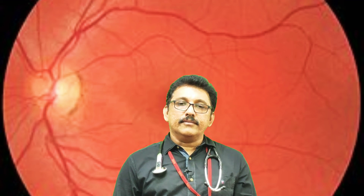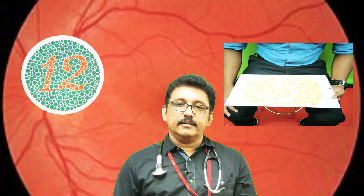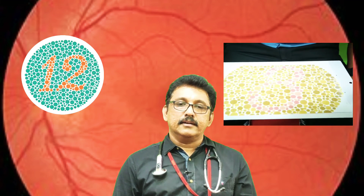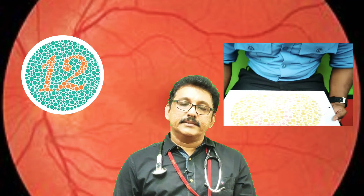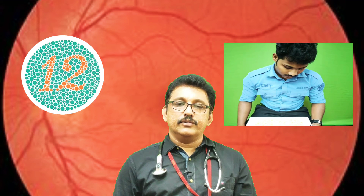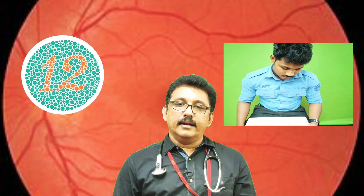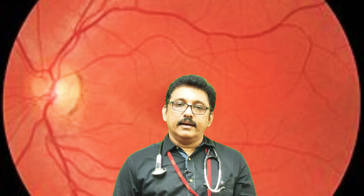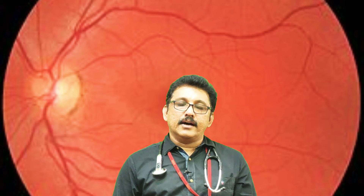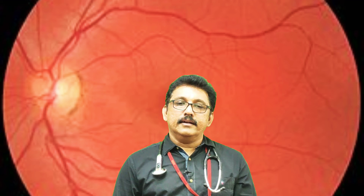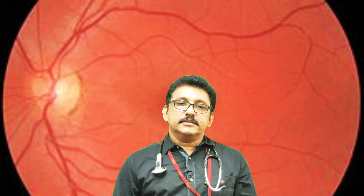Color vision can be checked using the Ishihara chart, or at the bedside you can test three major colors — blue, red, and green — by asking the patient to identify colored cards. If using the Ishihara chart, ask the patient to count the numbers in the chart; with normal color vision, the patient will correctly identify numbers such as 12.